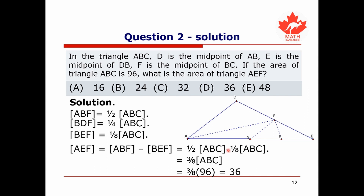Finally, the area of AEF equals the area of ABF minus the area of BEF. The area of ABF is one half the area of ABC, and the area of BEF is one eighth the area of ABC. So the area of AEF is three eighths times the area of ABC. Since ABC has area 96, the area of AEF is three eighths times 96, which equals 36. The answer is D, 36.